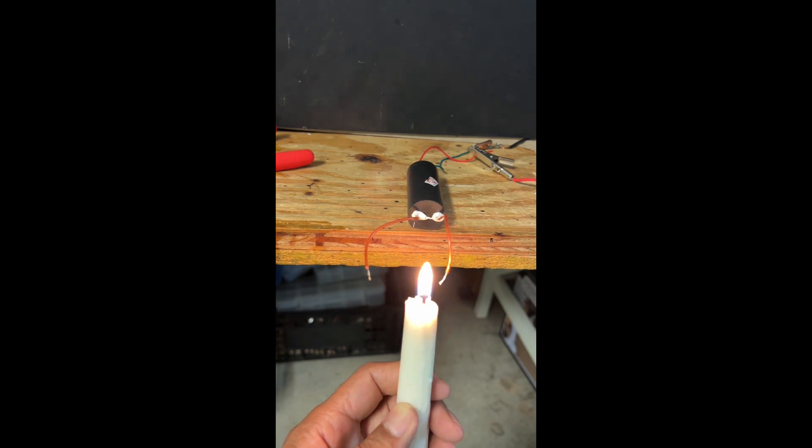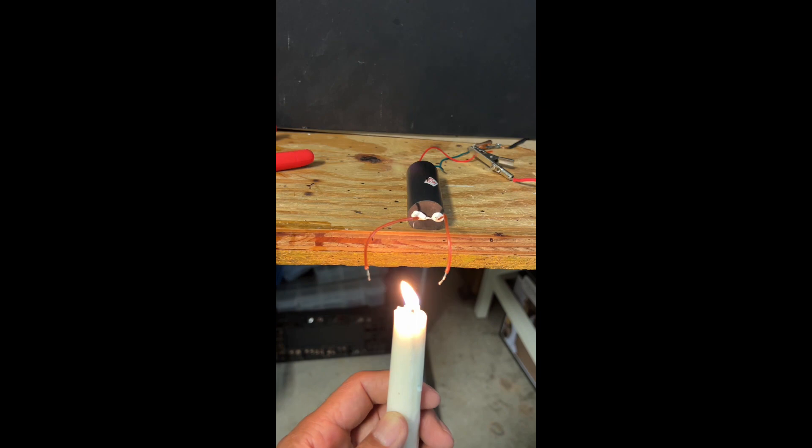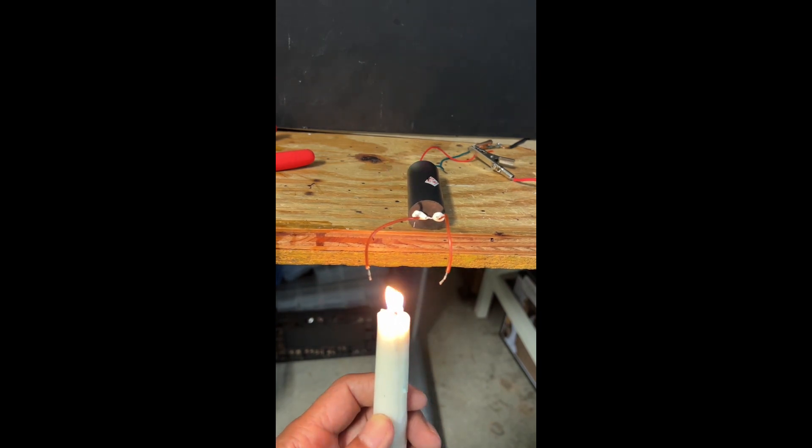The flame is being repelled by the positive, which is the right-sided wire, and attracted to the negative, which is the left-sided wire.